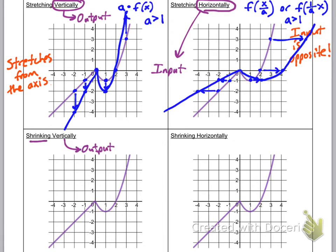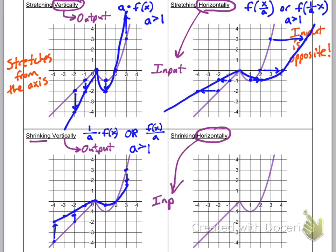Shrinking vertically is an output change, so we're thinking up and down and doing something to the outside of the function. Shrinking means multiplying by a fraction — a number between zero and one — written as one over a times f of x, or f of x divided by a, where a is greater than one. If a is two, everything moves halfway toward the x-axis: a y value of negative four becomes negative two, negative two becomes negative one, negative one becomes negative one-half, and a y value of three becomes one and a half.